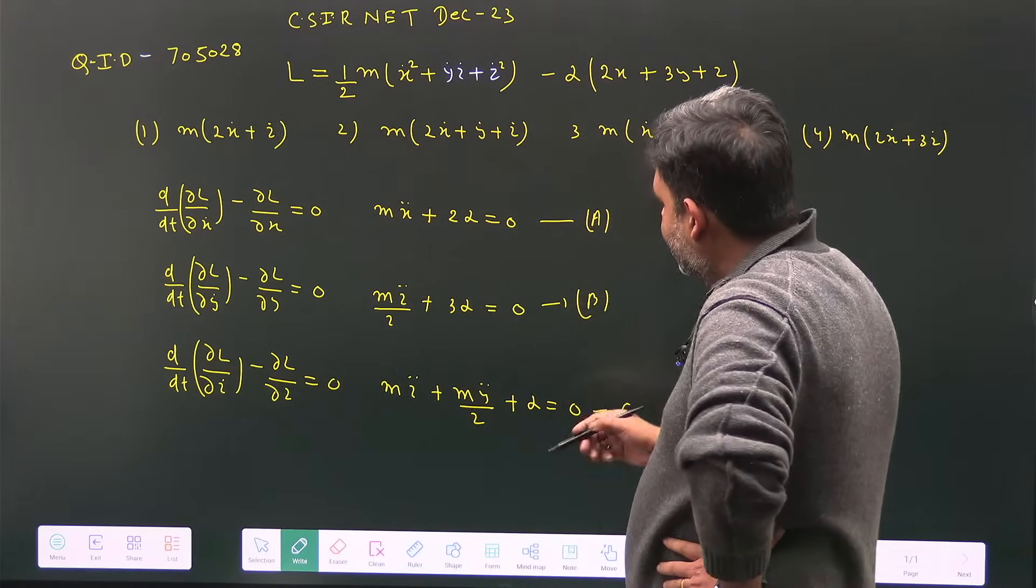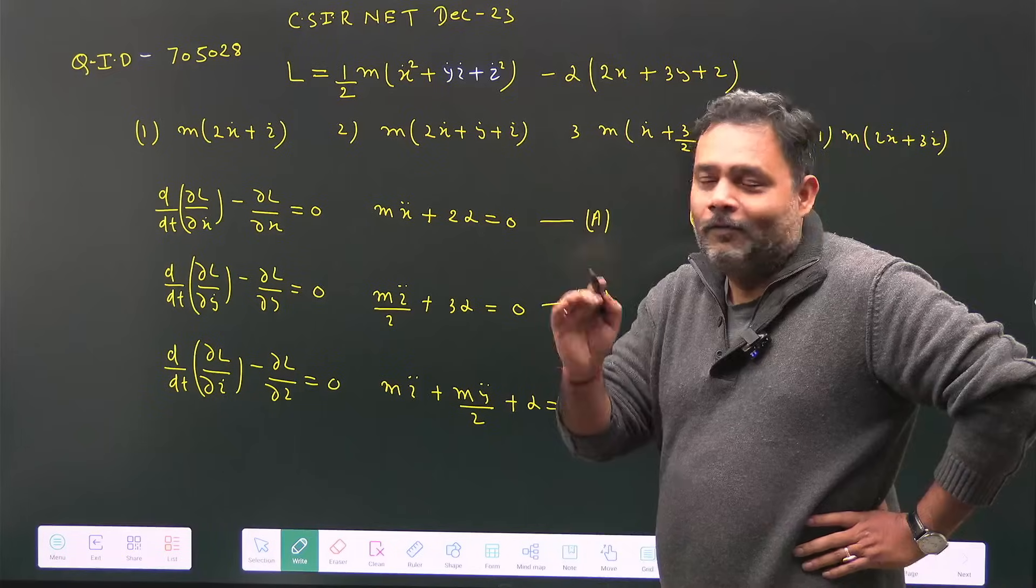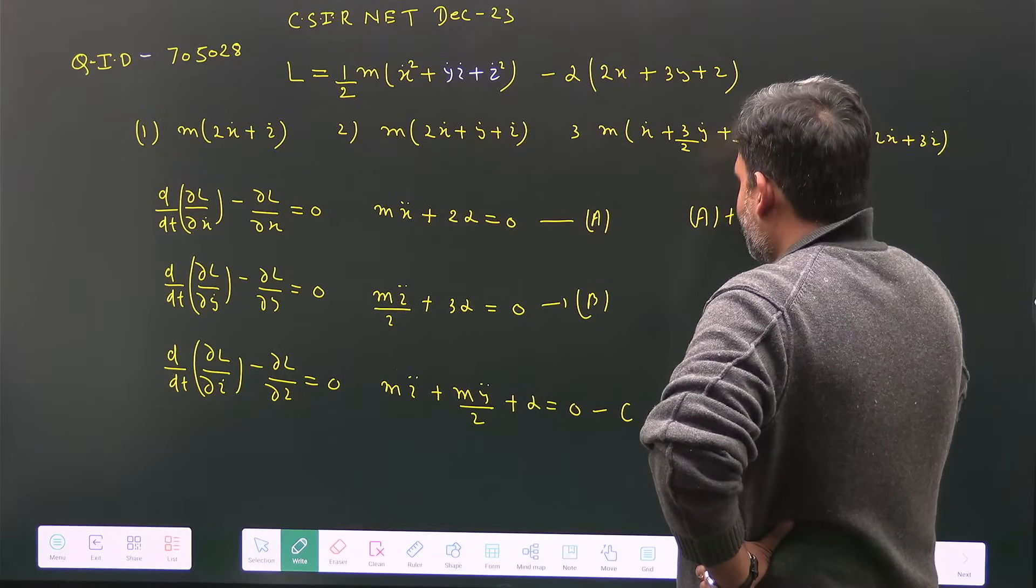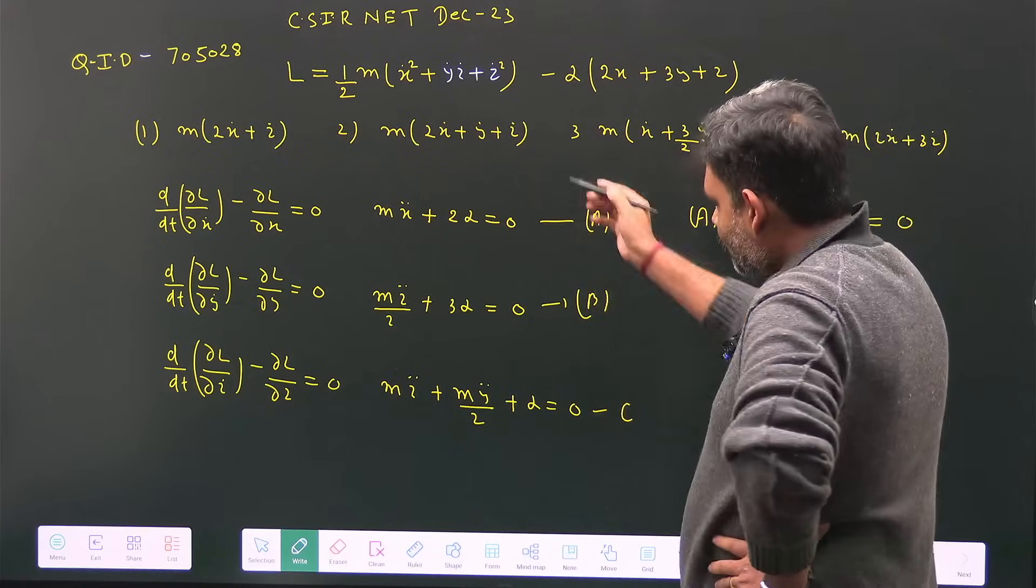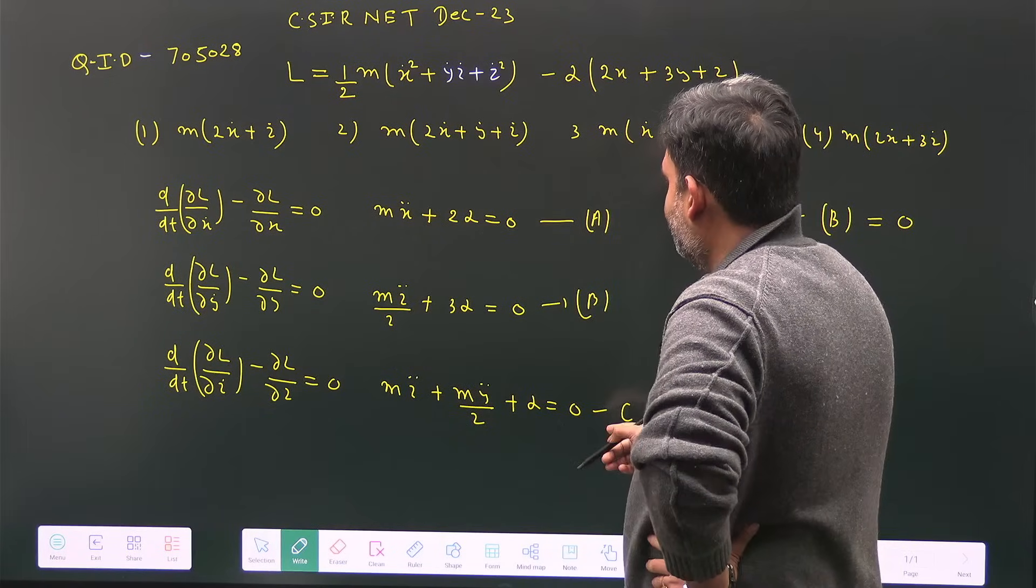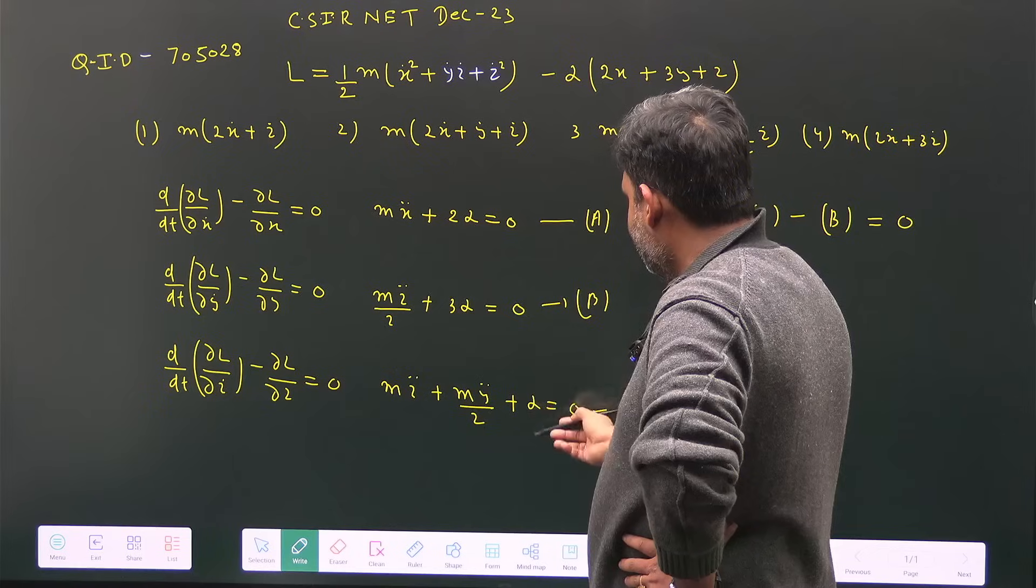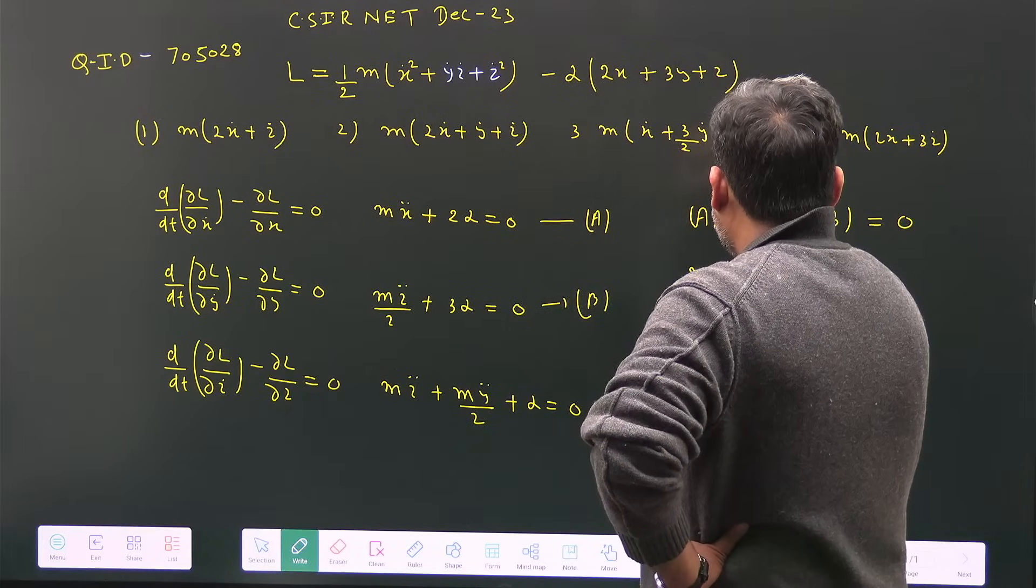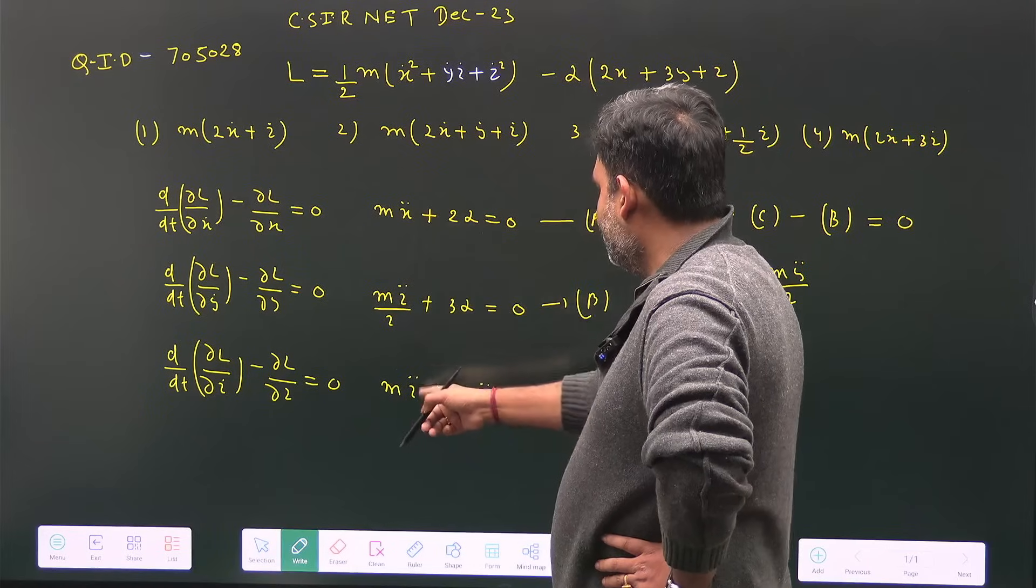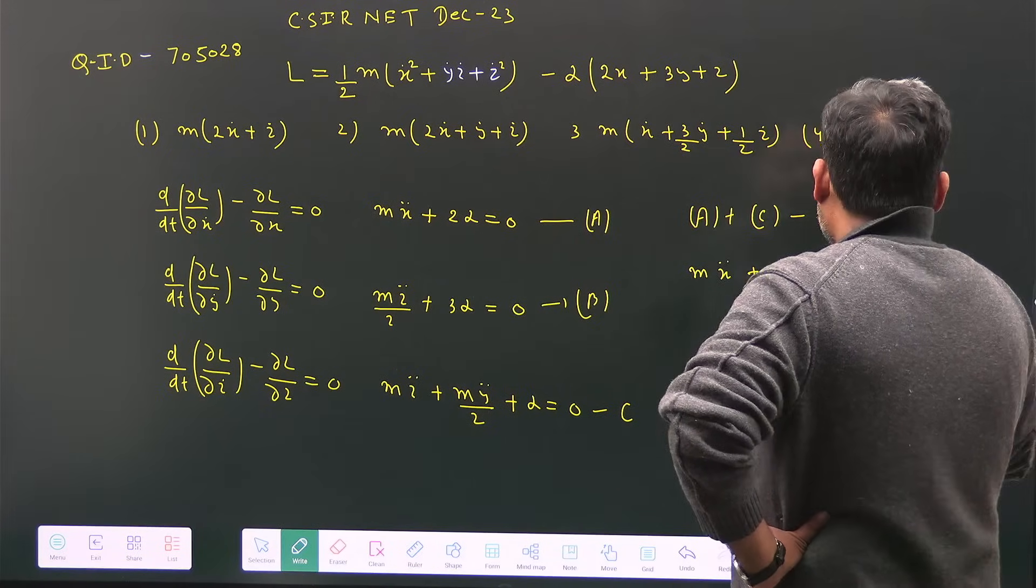The trick is: if you add 2α, α, and 3α carefully and subtract, the α terms cancel out. So we compute a + c - b = 0. From a + c, we get mẍ + 3α (which cancels with 3α), plus mÿ/2 and mz̈ - mz̈/2, giving mz̈/2 = 0.